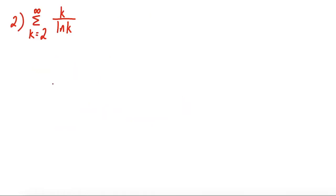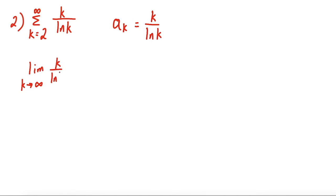For the next question, it's going to be the same idea. These questions are only as difficult as it is to find the limit of a sub k. In this case, a sub k is equal to k over natural log of k. When we take the limit as k goes to infinity of k over natural log of k, if we try to substitute in a really big number, the numerator heads towards infinity and natural log of k also goes to infinity, so this limit is in indeterminate form. That means we would have to use a technique like L'Hôpital's rule.